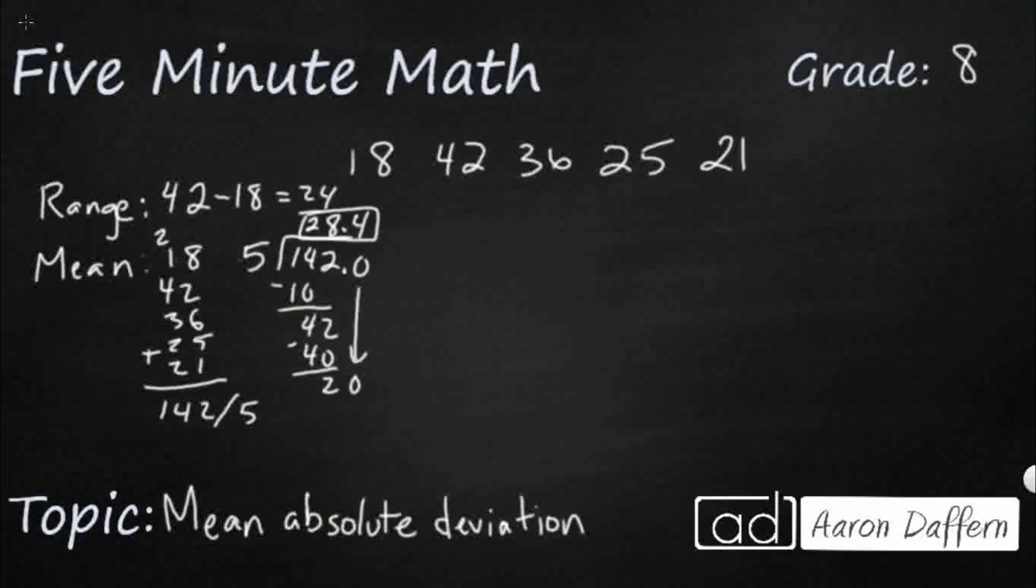So that's going to be 28.4. So this is a measure of center. So this range helps us with the spread. This mean helps us with the center. We could also find the median if we wanted to. Our median is going to be 25 because that's our middle number if we line them all up in order. But this mean absolute deviation is a new term that we're going to use in eighth grade. And sometimes it's just abbreviated as MAD. Mean absolute deviation, all capitals there. And it's also a measure of spread. But it gives us some more interesting sense of how spread out the numbers are.